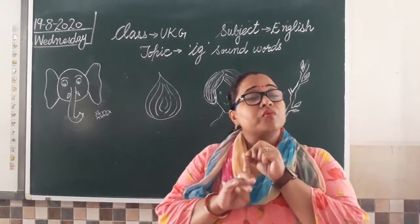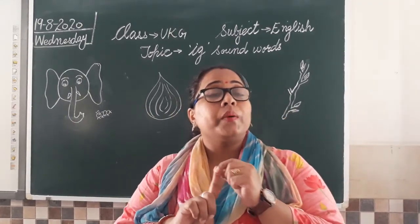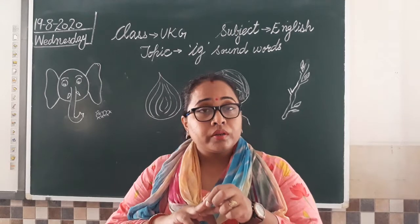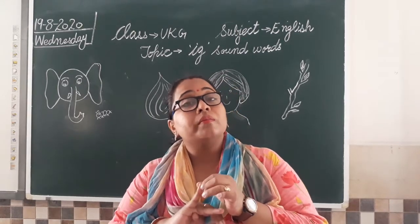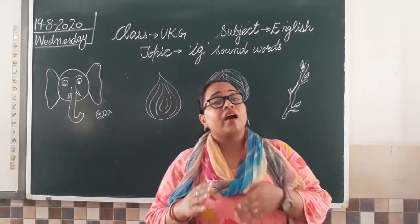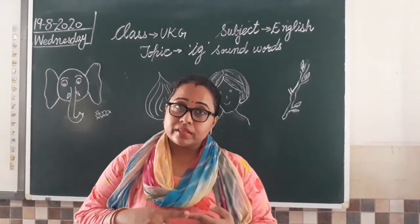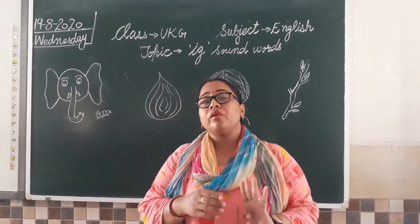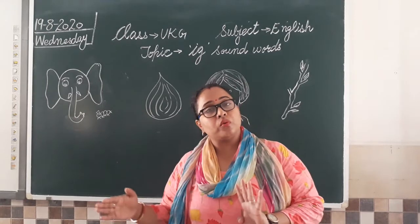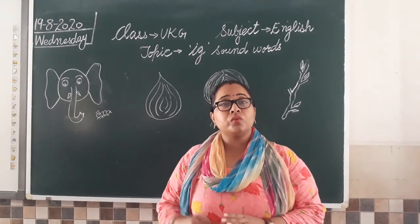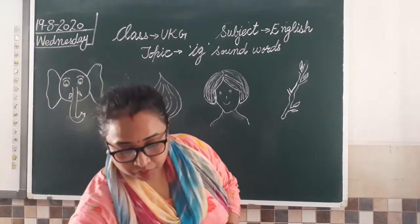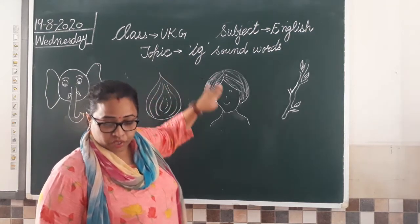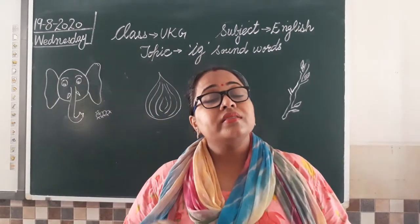The very first was Ib sound — bib, crib, rib. You remember? Then after that I taught you about Id sound, then I sound, and Im sound. So till now we have completed four different I-family words. Today we are going to learn about one new I-family word. That is Ig sound. So which sound are we going to do today? We are going to learn about Ig sound words.